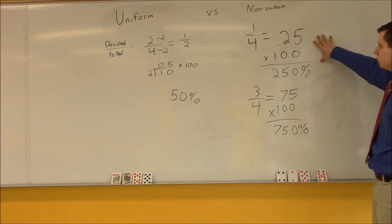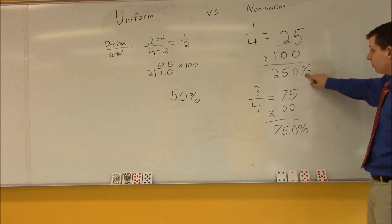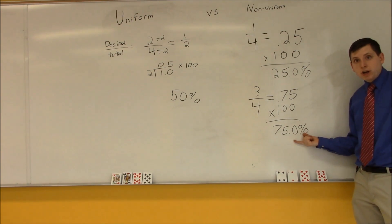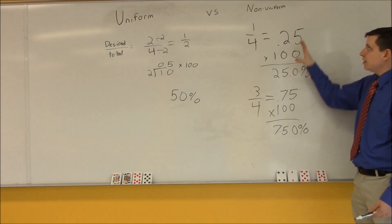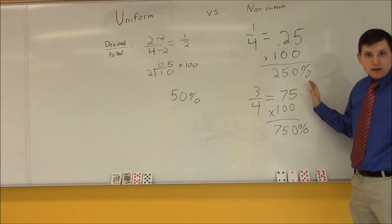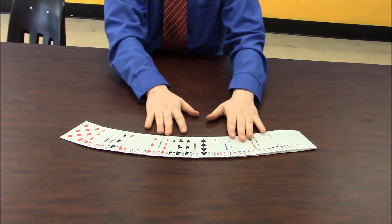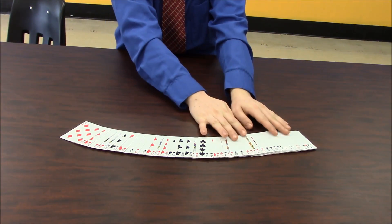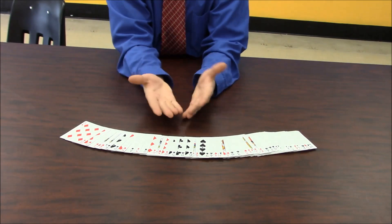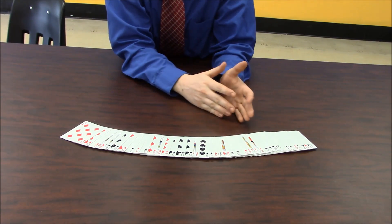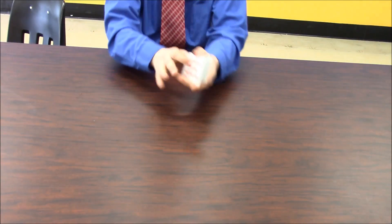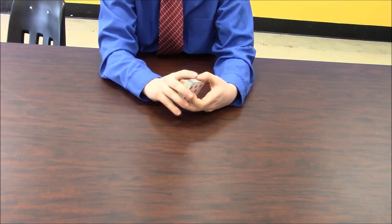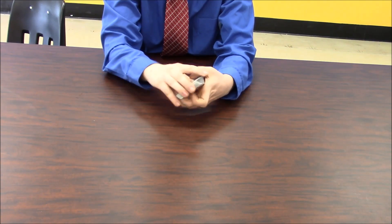The probability of choosing a black card is 25 percent, and the probability of choosing a red card is different — it is 75 percent. That's why this is non-uniform. With a full deck of all 52 cards, the probability of choosing either a red or black card would be equal, because there are 26 red cards and 26 black cards.